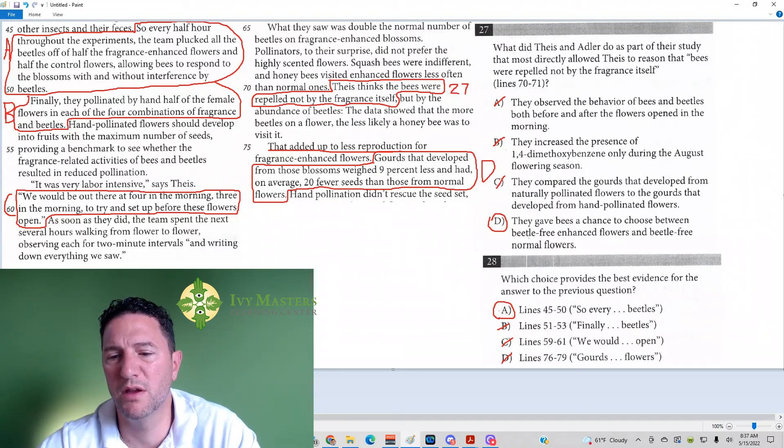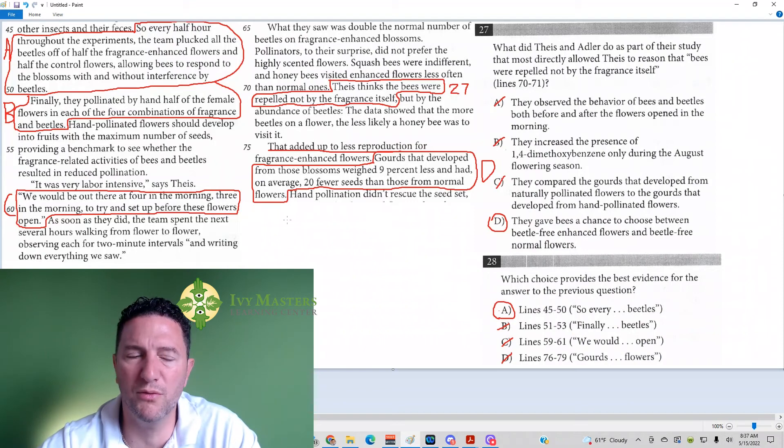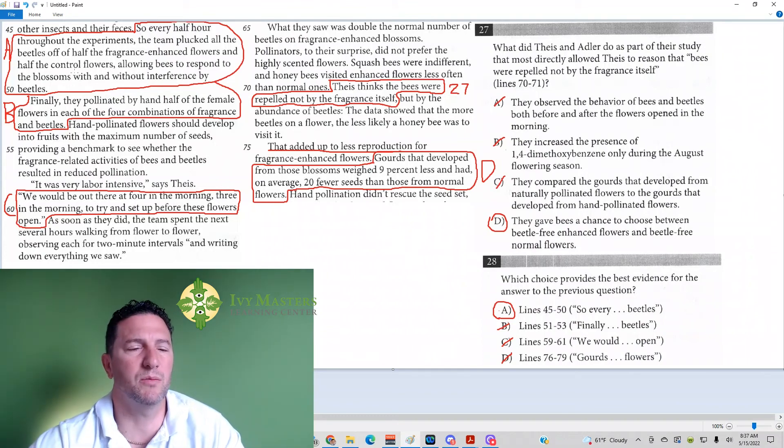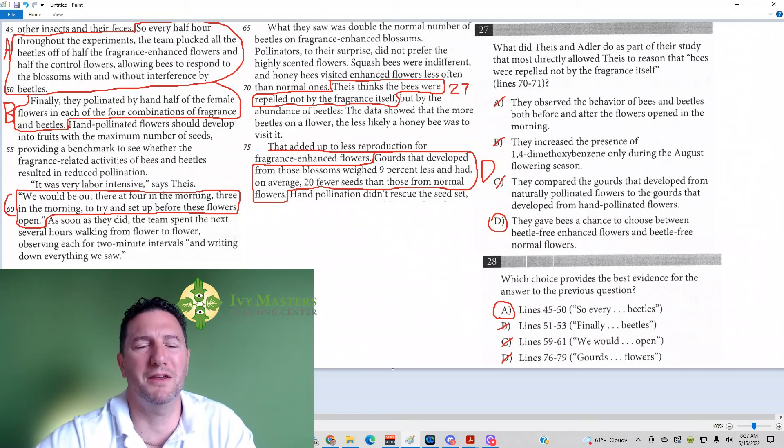They gave the bees a chance to choose between the beetle-free enhanced flowers and the beetle-free normal flowers. Every half hour throughout the experiment, the team plucked all the beetles off of half of the fragrance-enhanced flowers and half of the control flowers, allowing the bees to respond to the blossoms without interference by the beetles.